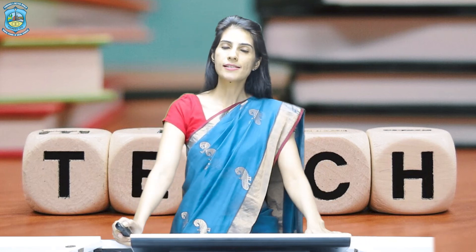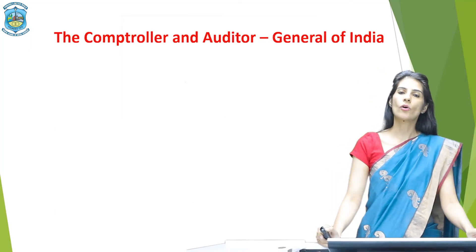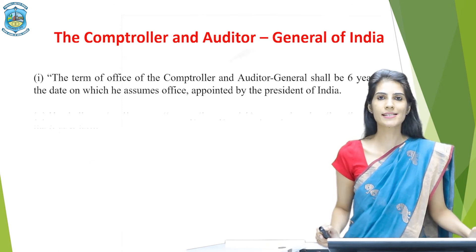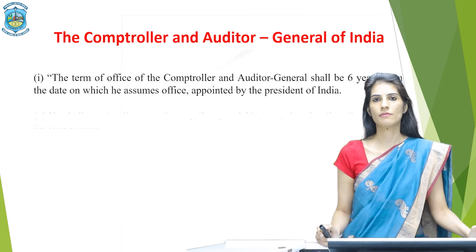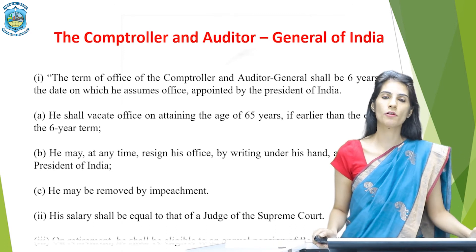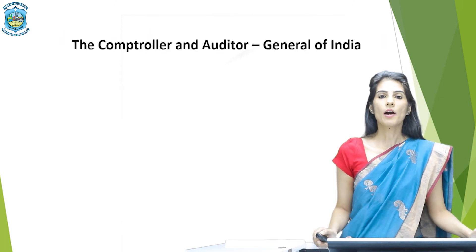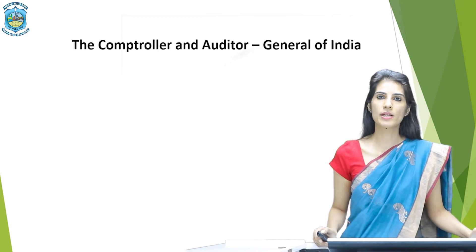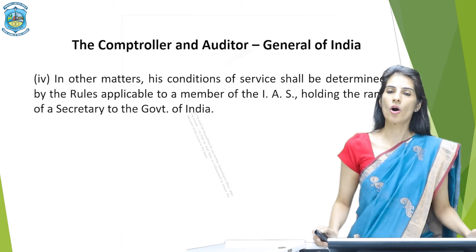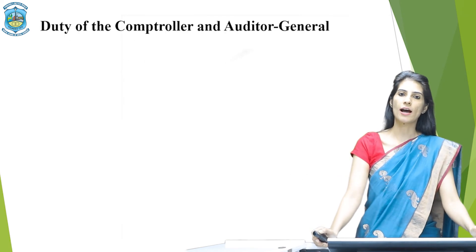The last thing to discuss in Government Accounting is who audits. The auditing is done by the Comptroller and the Auditor General of India. The Comptroller and Auditor General of India is appointed by the President of India for a term of six years or until the age of 65, whichever is earlier, and his duties and powers are in accordance with the Judge of the Supreme Court. Let us now discuss the basic duties of the Comptroller and the Auditor General of India.